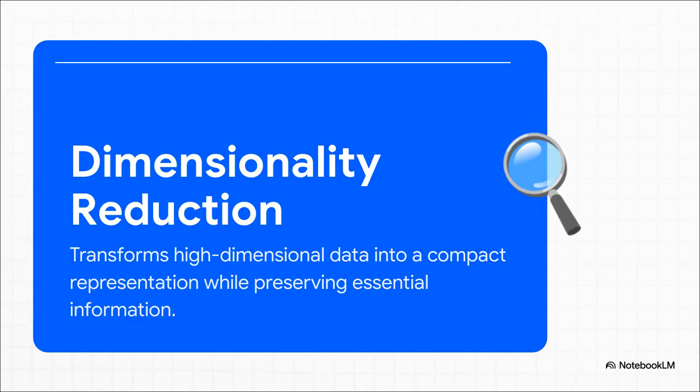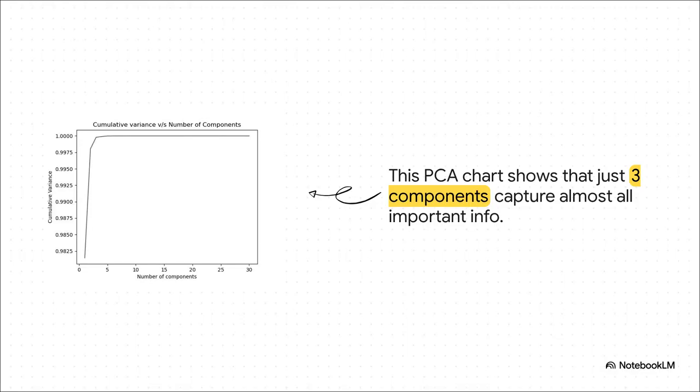So what do you do? Well, you bring in one of the superstars of unsupervised learning, dimensionality reduction. They used a famous technique called principal component analysis, or PCA, which is specifically designed to take a huge, messy data set and boil it down to just its most important ingredients, essentially filtering out all that noise. And in this chart, this is where the magic happens. Look at how steep that curve is right at the beginning. That's telling us that just a handful, in this case only three, of these new combined principal components could explain almost all of the important variation in the original data set. They were able to shrink dozens of features down to just three without losing the good stuff.